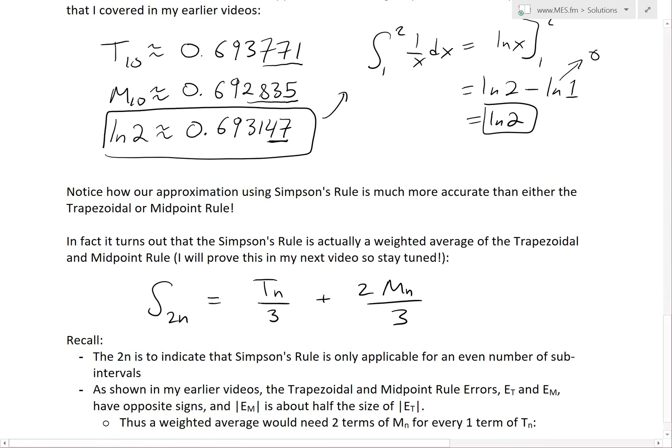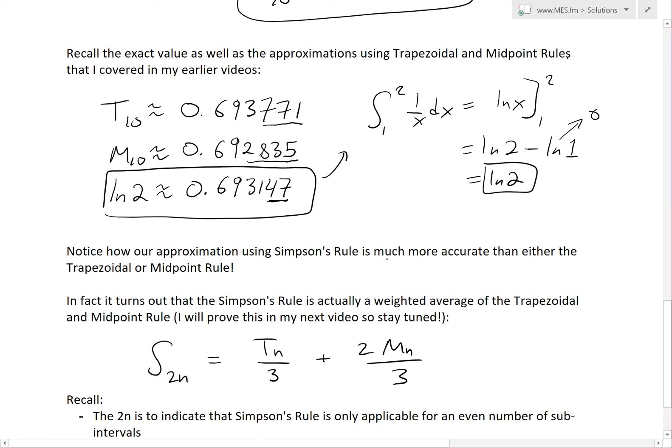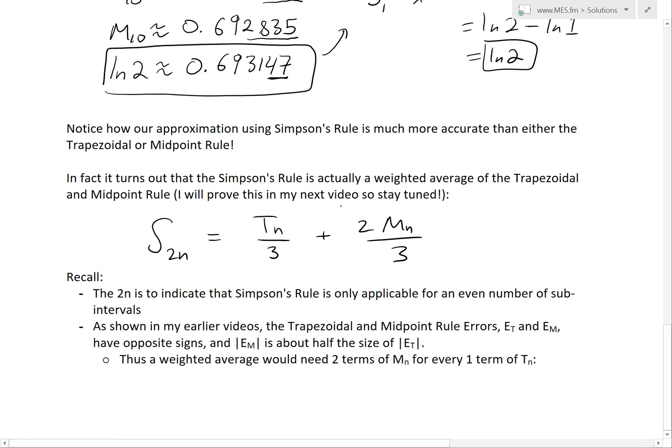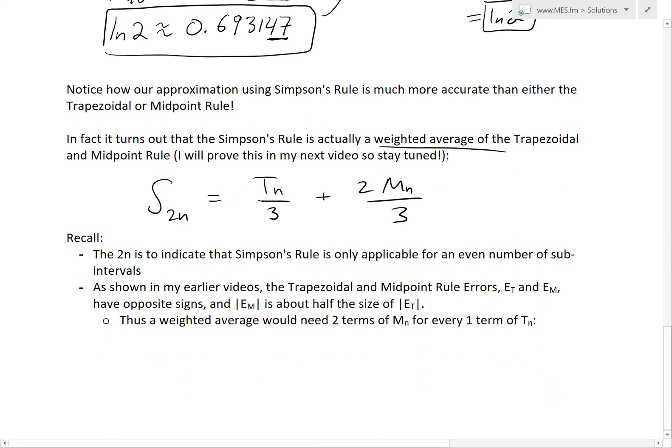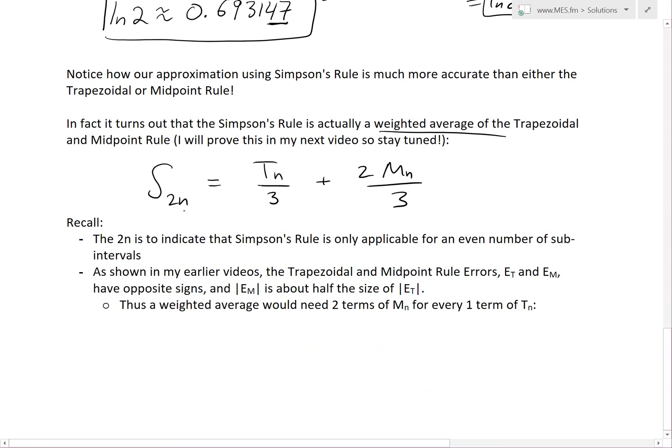Notice how our approximation using Simpson's Rule is much more accurate than either the trapezoidal or midpoint rule. But in fact, it turns out that Simpson's Rule is actually a weighted average of the trapezoidal and midpoint rule, and I'll prove this in my next video. Basically, S_2n, and this 2n is to indicate that Simpson's Rule is only applicable for an even number of subintervals, so we can't have odd ones.